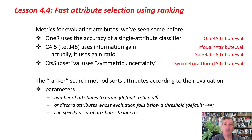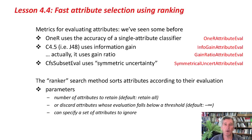The ranker search method is very simple — it just sorts attributes according to their evaluation. You can specify the number of attributes to retain; the default is to retain them all. Or you can ask it to discard attributes whose evaluation falls below a certain threshold, or you can specify a certain set of attributes that you want to ignore.